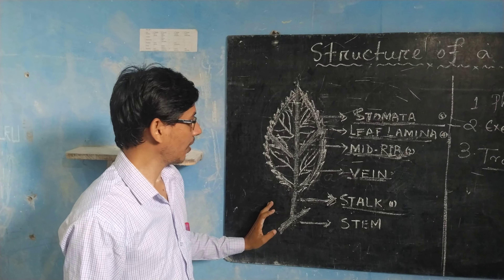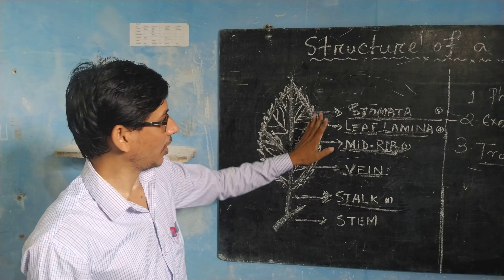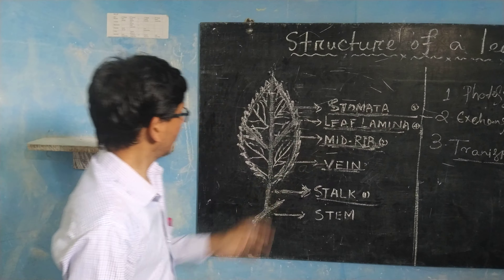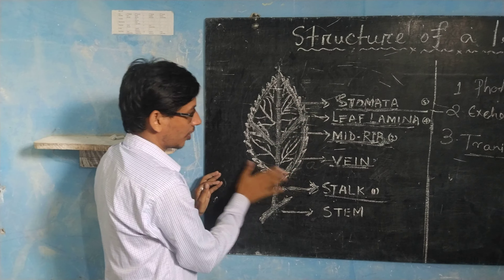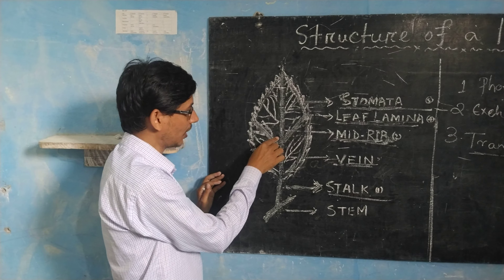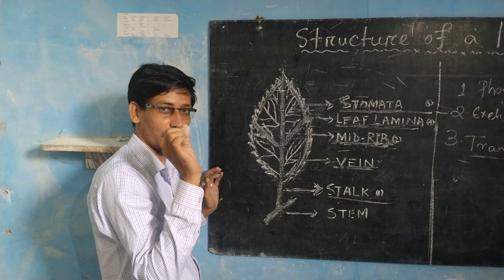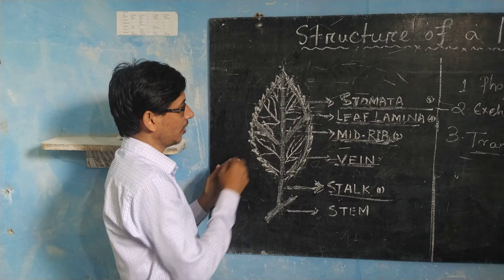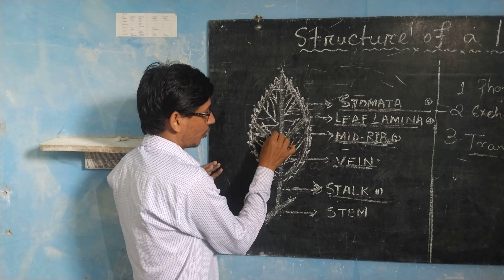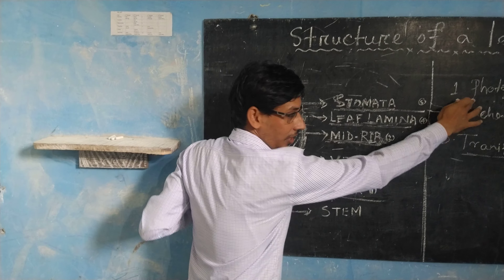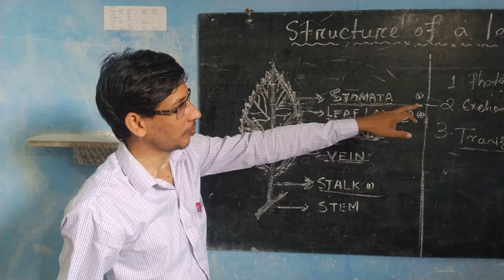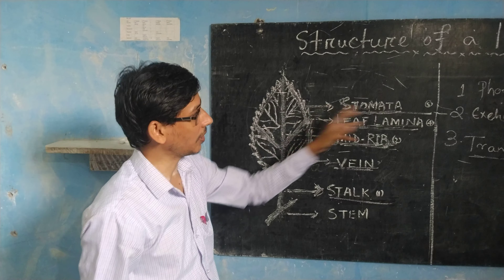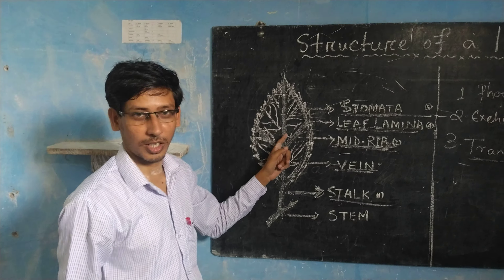Let us discuss the conclusion of the main parts of the leaf. The upper surface of the leaf is green. Why is it green? Because it contains a small pigment called chlorophyll. By the help of chlorophyll, the photosynthesis process takes place. By the help of the photosynthesis process, the leaf prepares food. This is why the leaf is called the food factory, or the kitchen of the plant.